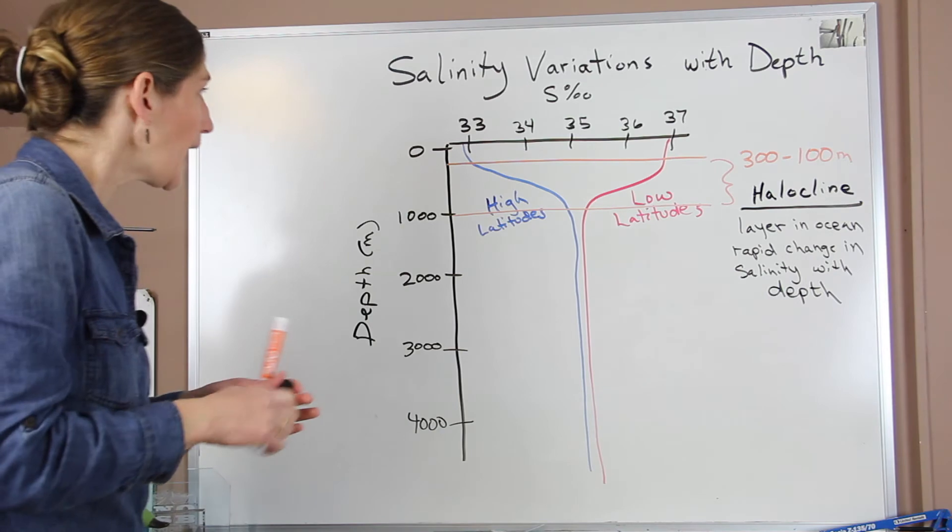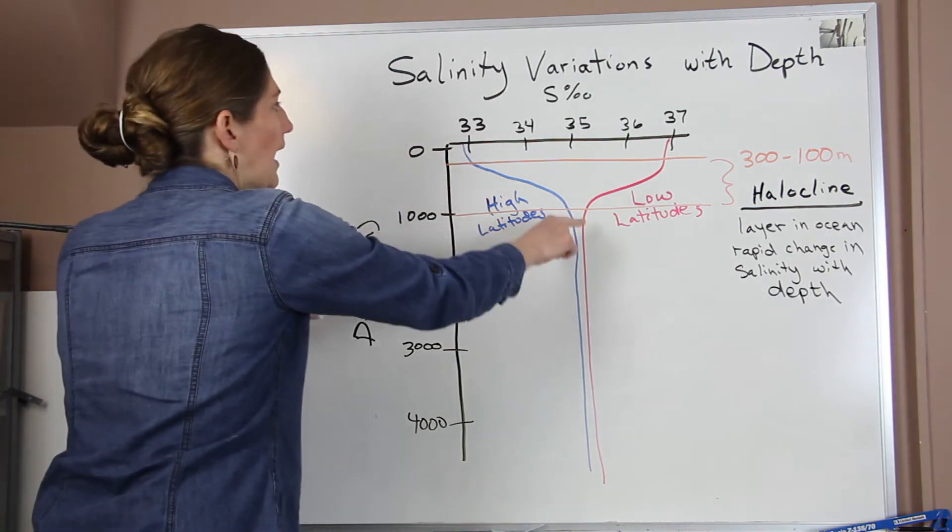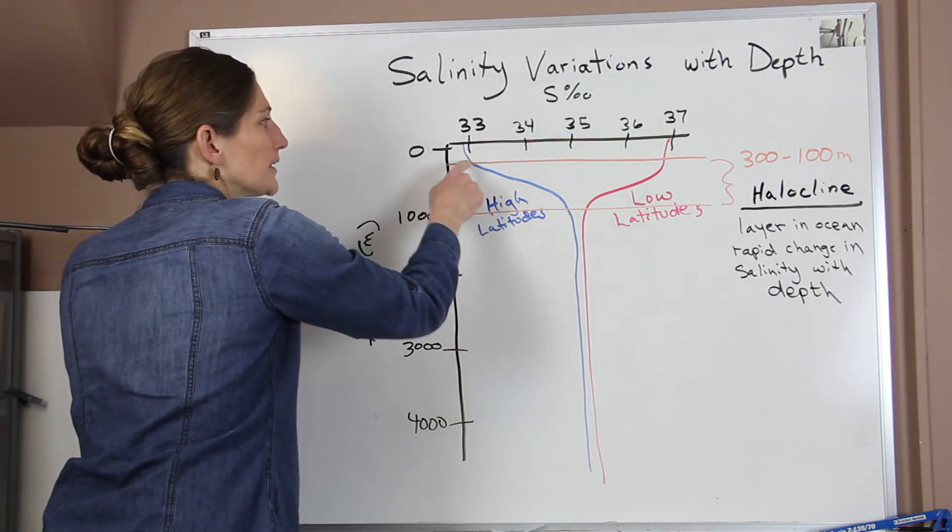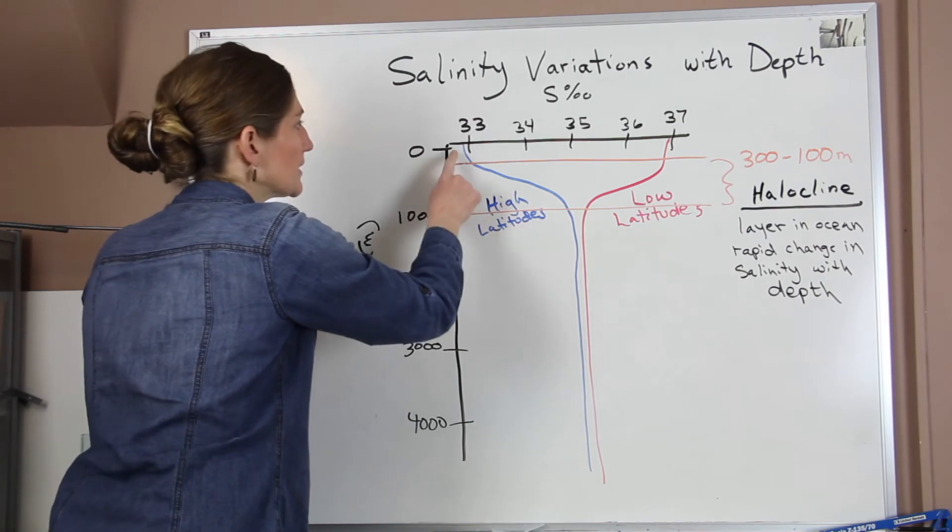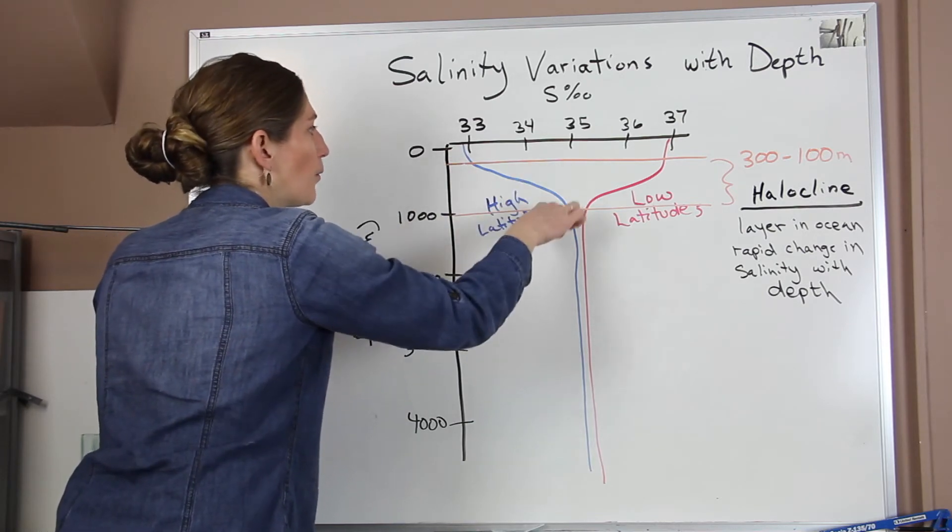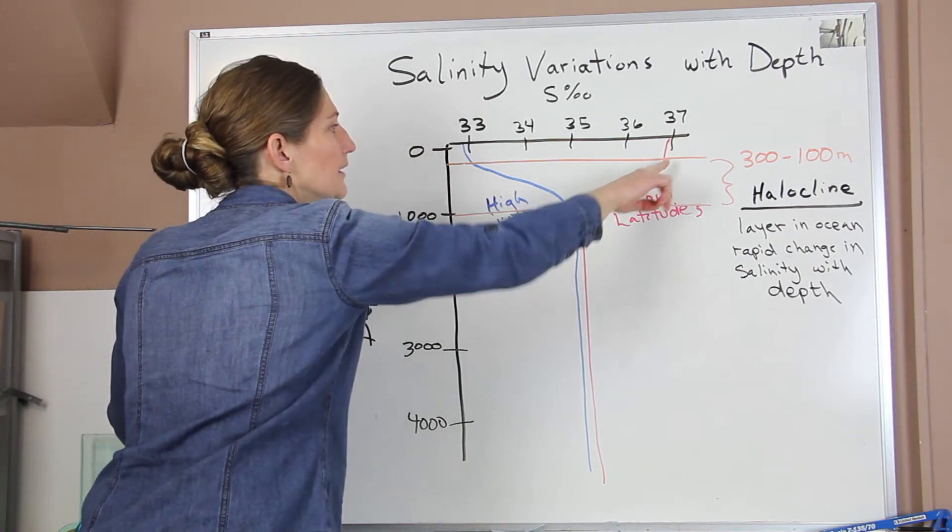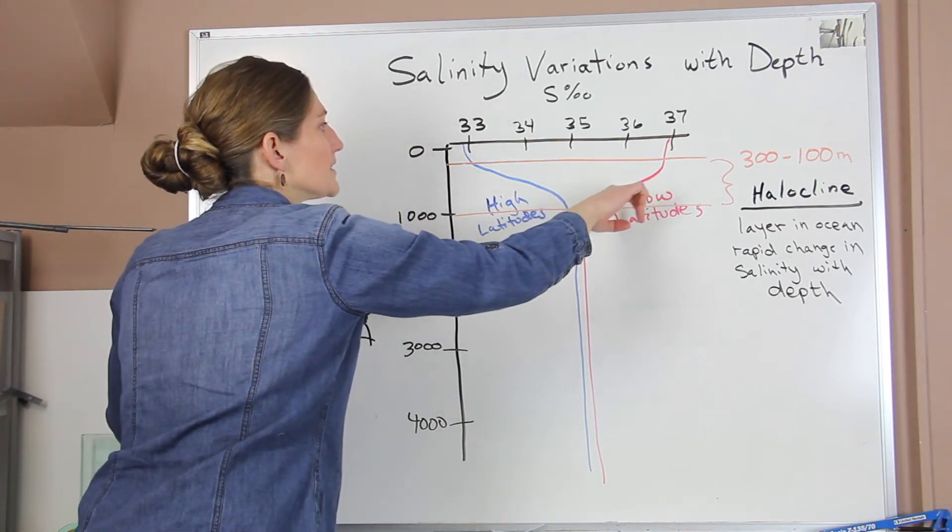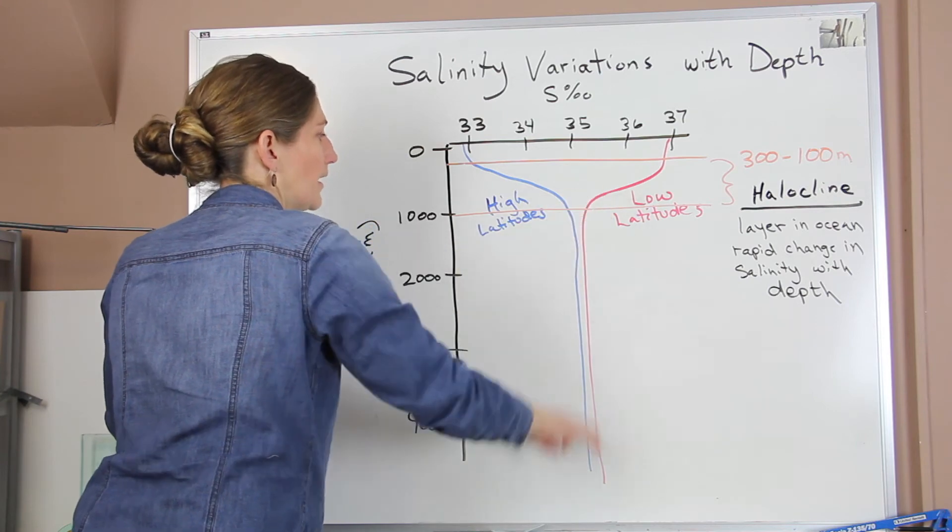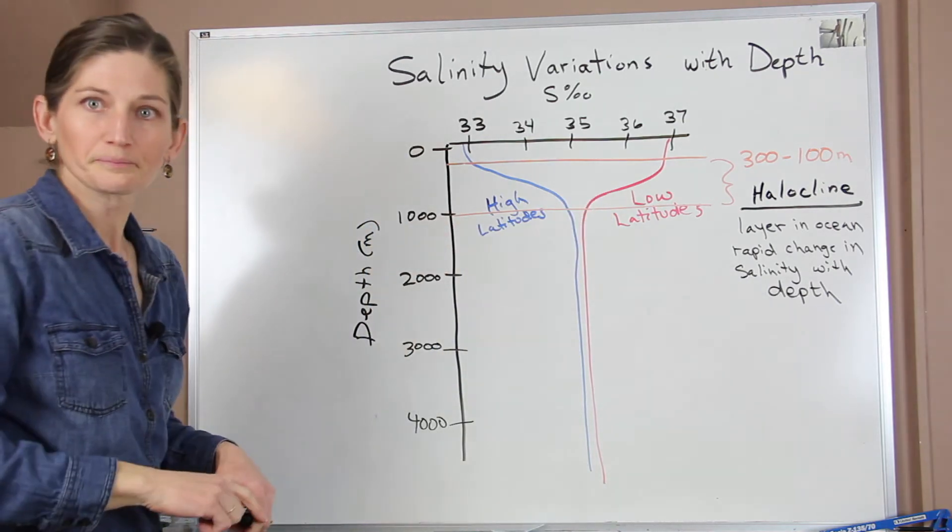And so what we can see in the high latitudes is that this halocline goes from being a low salinity to a higher salinity so that it's an increasing salinity with depth. And at our low latitudes, we have a high salinity and it is decreasing with depth as it gets down below that layer.